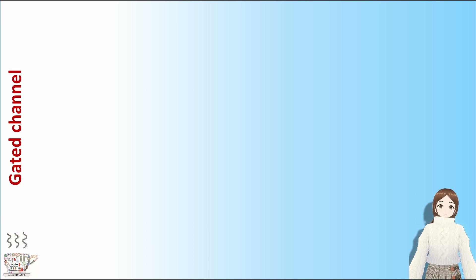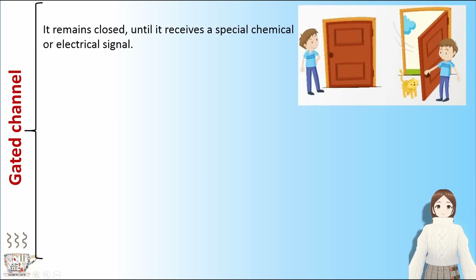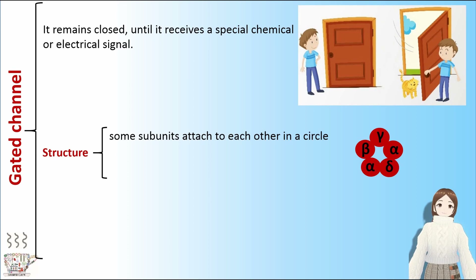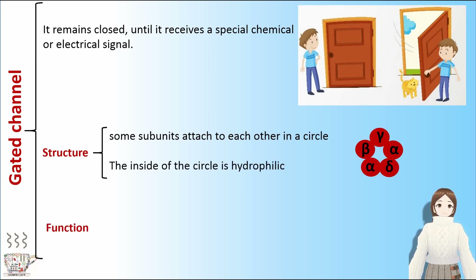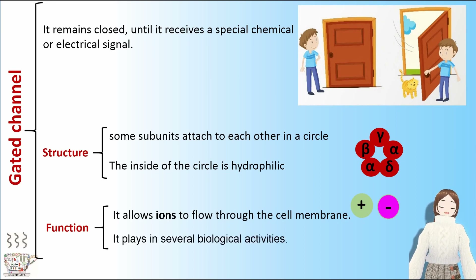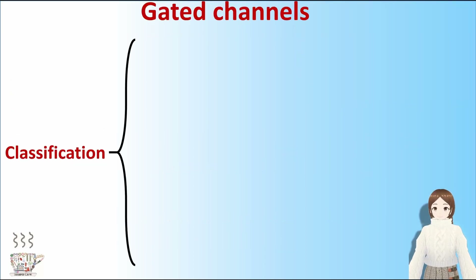Gated channels. They remain closed until they receive a special chemical or electrical signal. In their structure, some subunits attach to each other in a circle and the inside of the circle is hydrophilic. Their function: they allow ions to flow through the cell membrane and play a role in several biological activities. Gated channels can be classified into three subgroups: mechanically gated channels, ligand gated channels, and voltage gated channels.